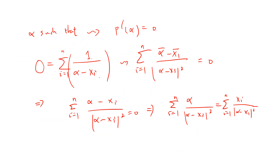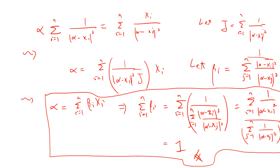Now suppose alpha is a zero of P', so we get zero equals the sum from i=1 to n of 1/(alpha − x_i). Taking the complex conjugate of both sides gives the sum from i=1 to n of (alpha − x_i)-bar divided by |alpha − x_i|² equals zero. This leads to: the sum of alpha/|alpha − x_i|² equals the sum of x_i/|alpha − x_i|².